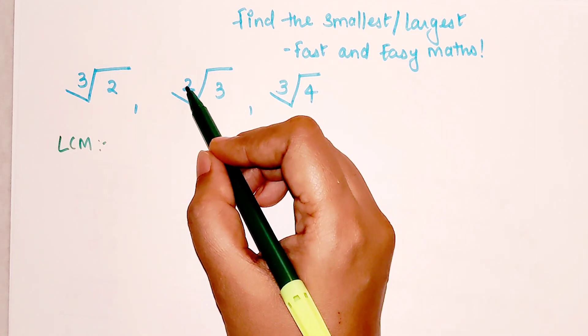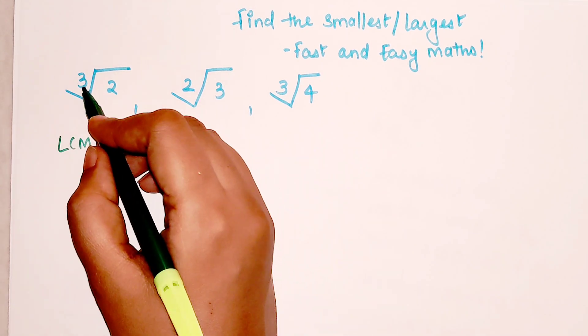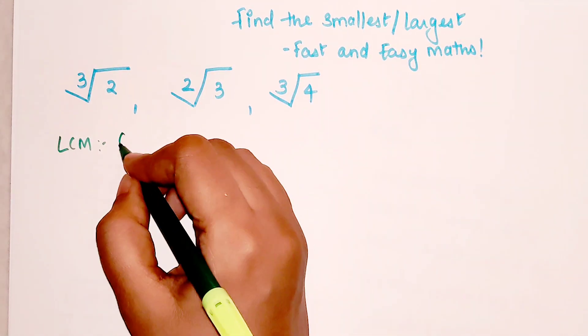Here I have written purposely 3. Actually, if you don't write 3 it is considered as 2 only. So here 3, 2, and 3, so LCM is 6.